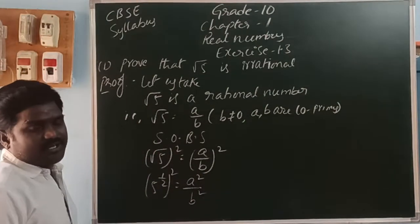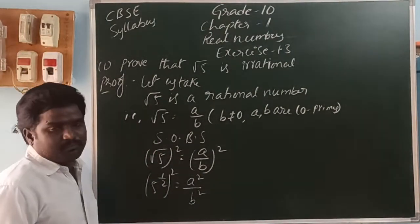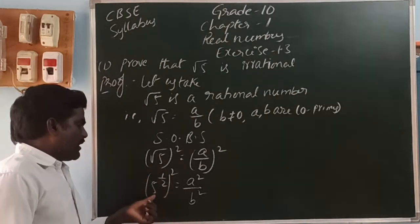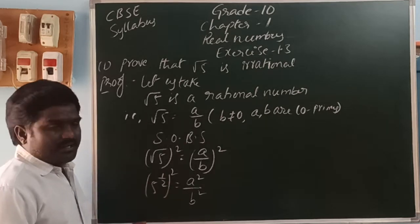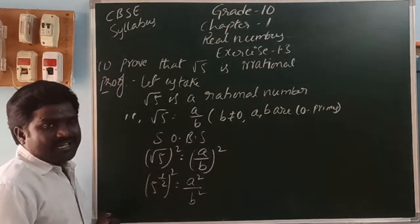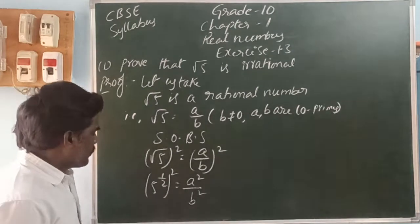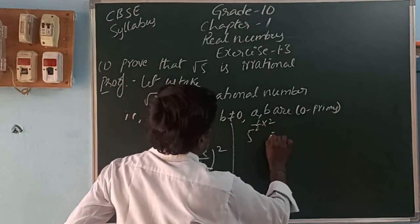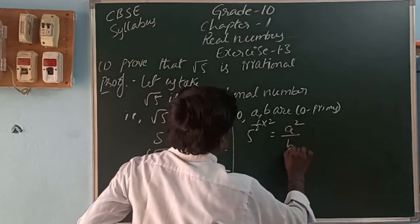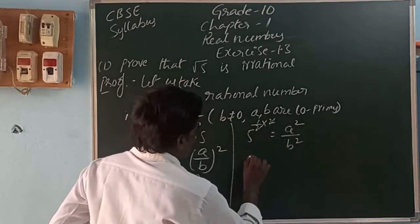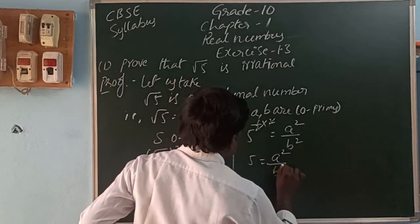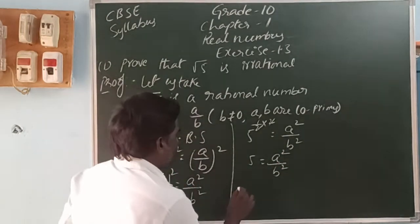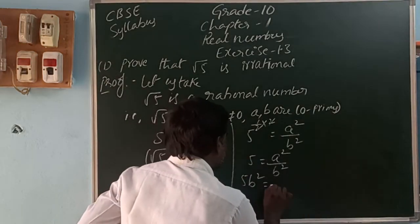We use the law of exponents: (a^m)^n = a^(m×n). So 5 power (1/2 × 2) equals a squared by b squared. The 2s cancel, giving us 5 equals a squared by b squared. Bringing b squared to the left: 5 × b squared equals a squared.